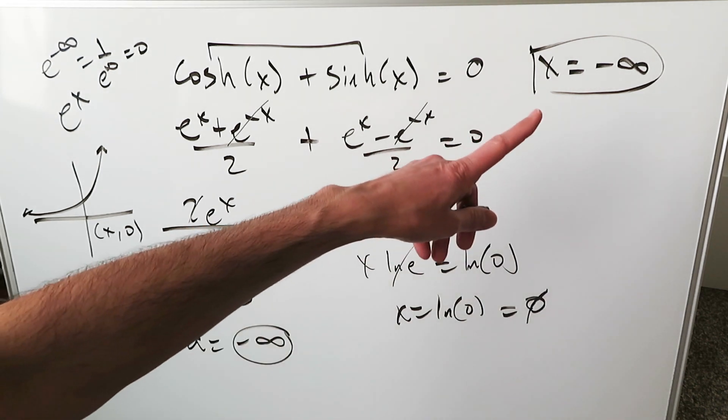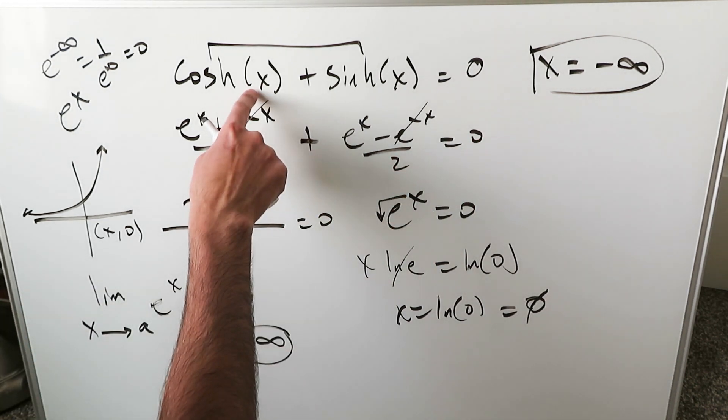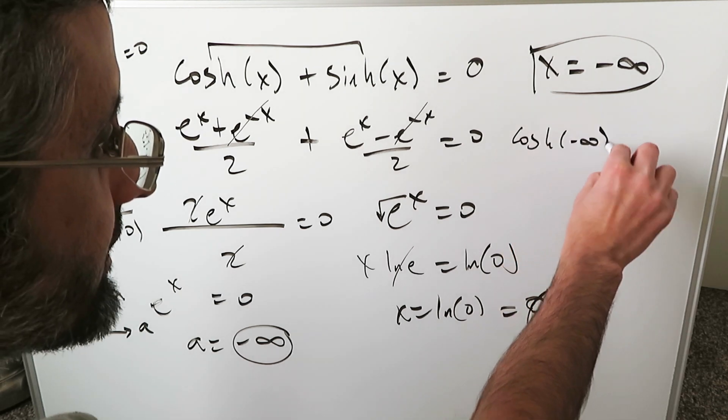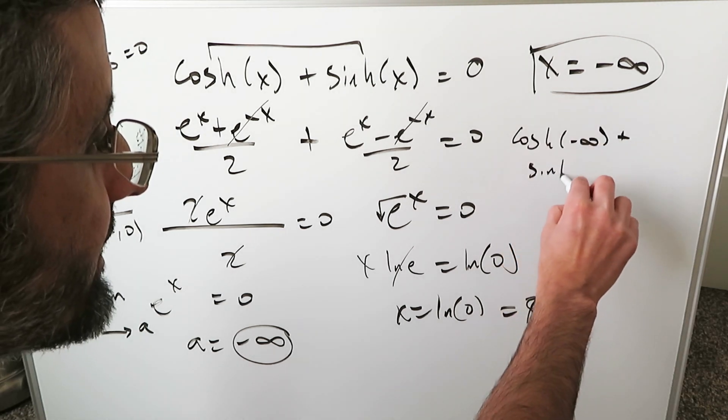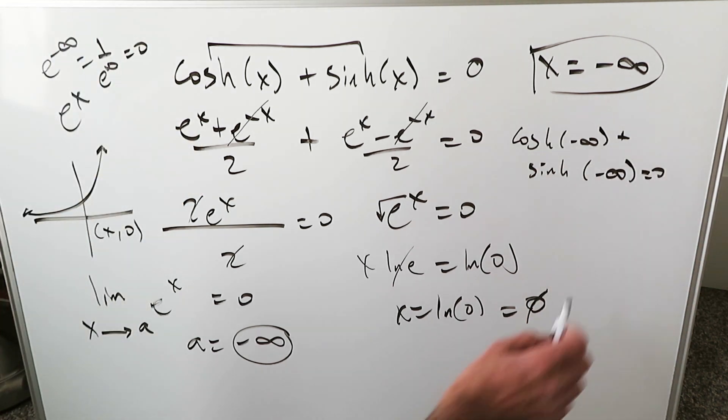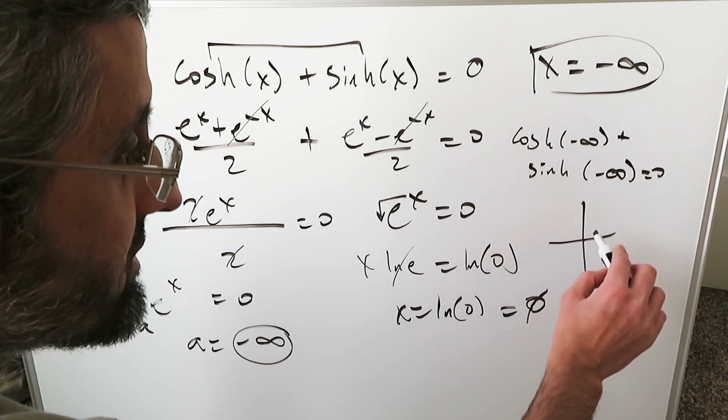And now think about it. When you take that minus infinity and you put it over here, you're essentially saying you're doing hyperbolic cosine of minus infinity plus hyperbolic sine of minus infinity equals 0. And it kind of makes sense. If you look at the graph of these individually, what do you have?